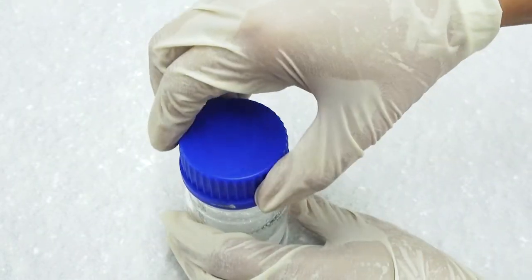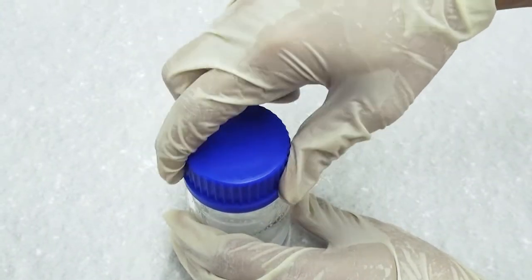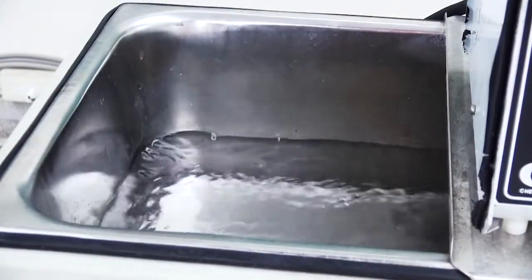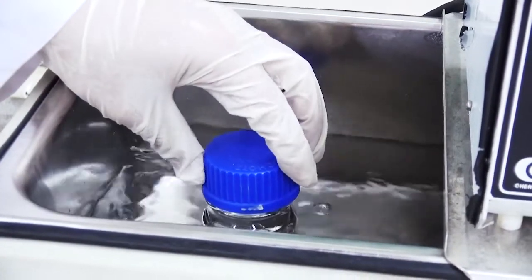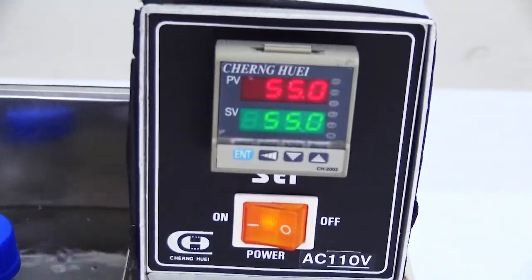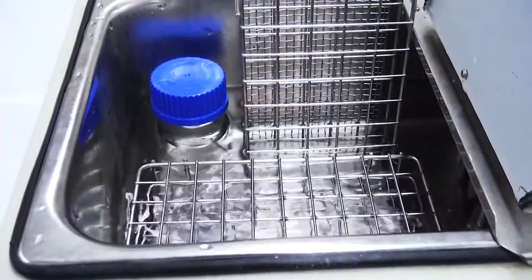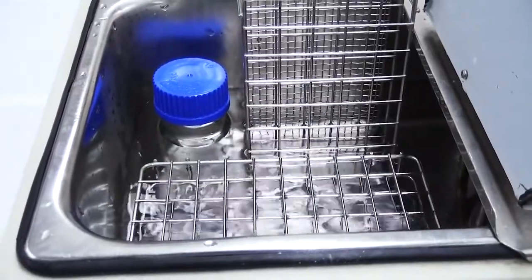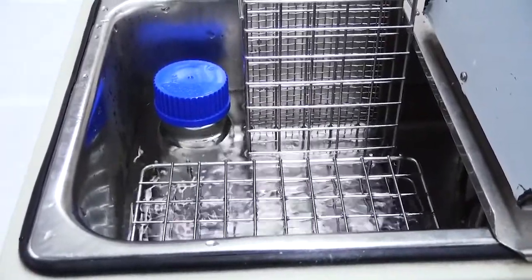Once the agarose powder is completely dissolved, fasten the cap tightly. Place the sealed bottle into the water bath so the solution will cool down to the proper temperature without solidifying. Prevent the bottle from floating in the water bath. Make sure the water bath level is higher than the gel solution level.